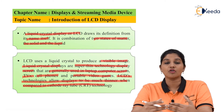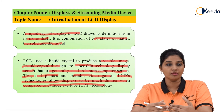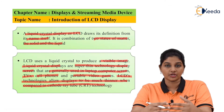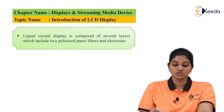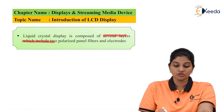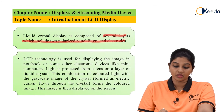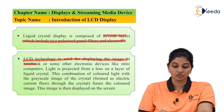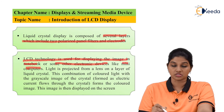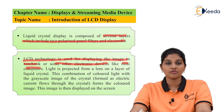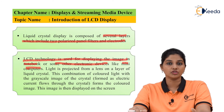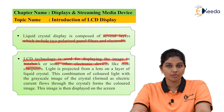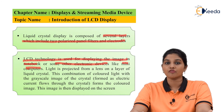The CRT display operates on the principle of deflection of electron beam by using horizontal and vertical deflection plates, whereas the LCD display uses liquid crystal for producing a visible image. Liquid crystal display consists of several layers which include two polarized panel filters and electrodes. The CRT tubes cannot be used in handheld devices, so to overcome this drawback of CRT, the development came in the form of LCD.